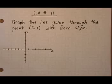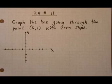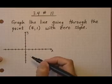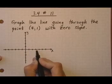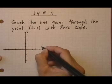And I think I've got time for one more here. 3.4 number 11: Graph the line going through the point 5,1 with zero slope. Alright, let's graph the point 5,1 first of all. 1, 2, 3, 4, 5, 1. There's 5,1.